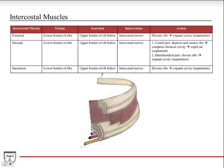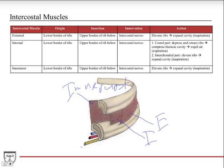Moving to the intercostal muscles, there are three types shown in the diagram: the external, the internal, and the innermost. The external fibers go medially and inferiorly — remembered by the expression 'hands in your pockets.' The internal and innermost fibers are orthogonal or perpendicular to the external, going more superiorly and medially. The innermost intercostal fibers actually parallel the internal, so internal and innermost do the same thing while external goes in the opposite diagonal direction.